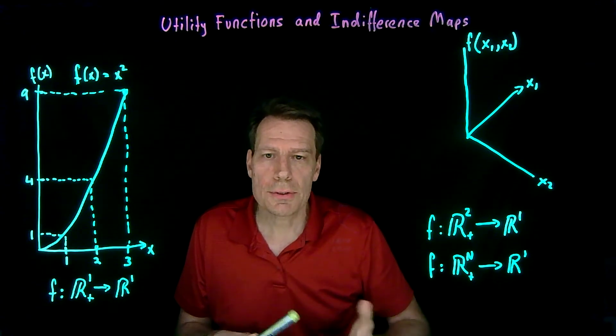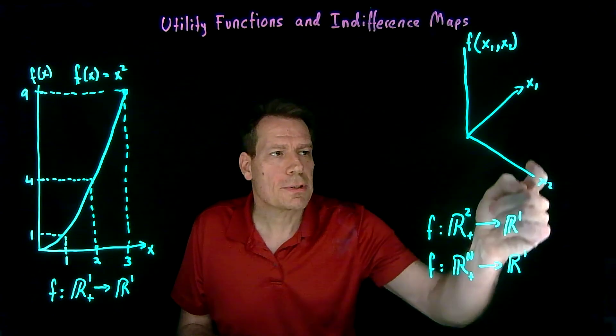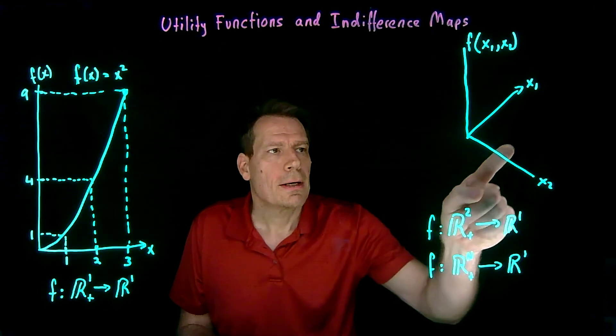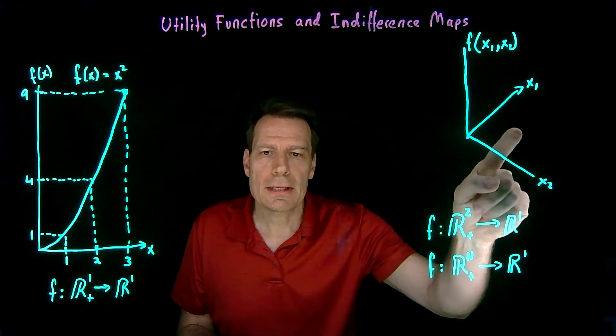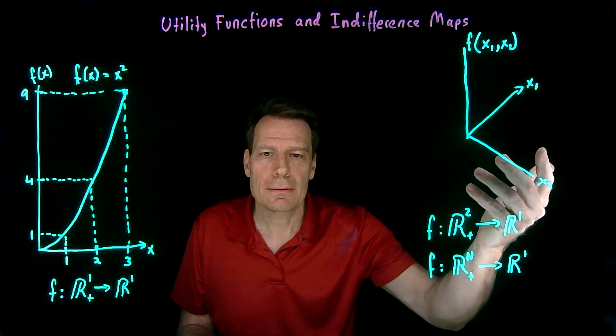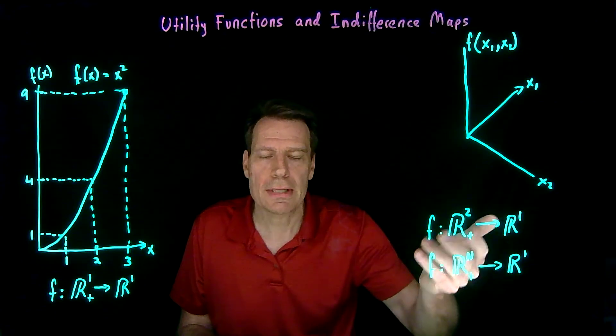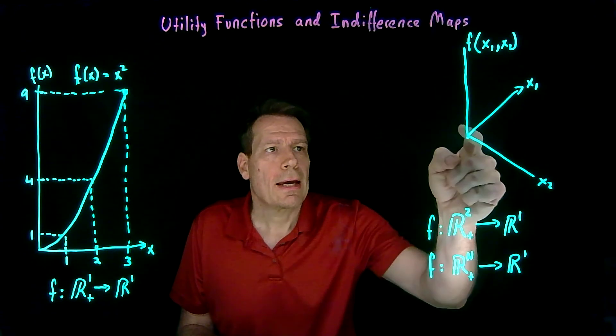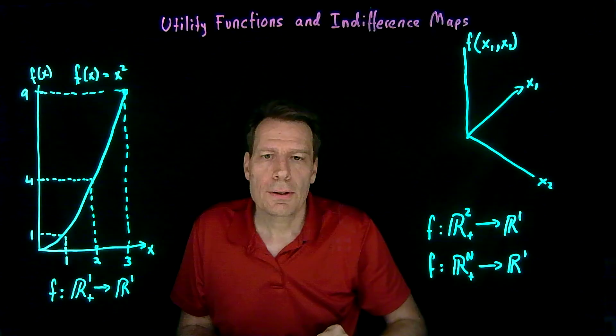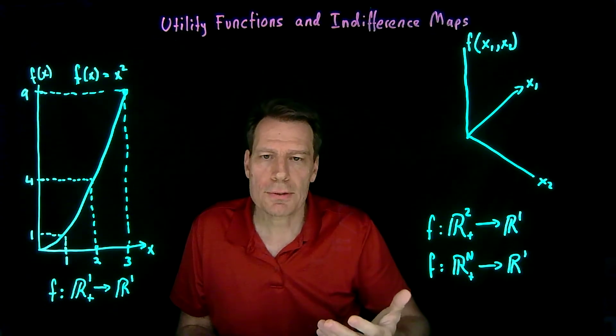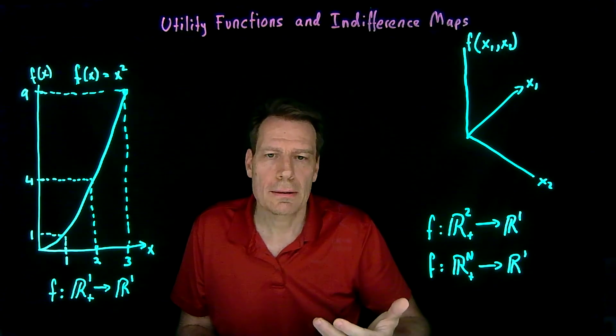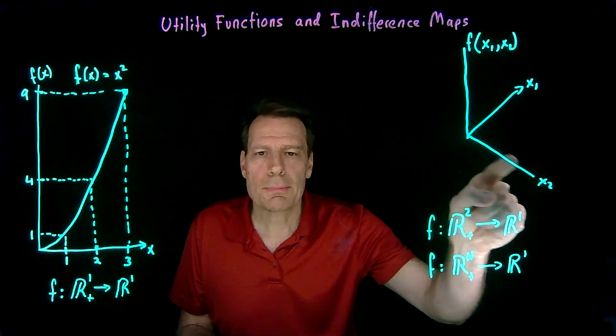Now, when we're talking about goods, x1 might be apples, x2 might be oranges, and each of these points is a bundle, a basket of goods, oranges and apples. And we could use a rule like this to assign what level of happiness or what level of utility you get from each of these consumption bundles.